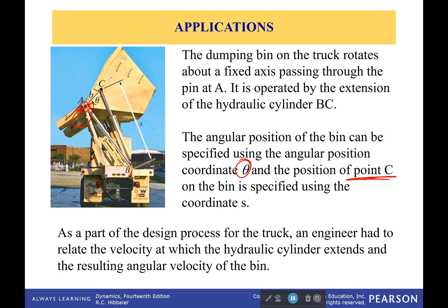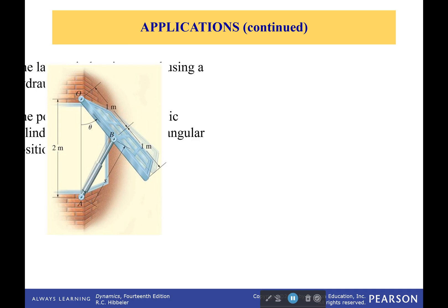So when you're an engineer and you're designing this, you're having to relate the velocity at which the hydraulic cylinder extends as well as how that affects the angular velocity of the bin. Because you don't want to go too quick, otherwise your cylinder is going to snap because it's got too much stress. Don't want to go too slowly, otherwise you're just waiting a really long time.